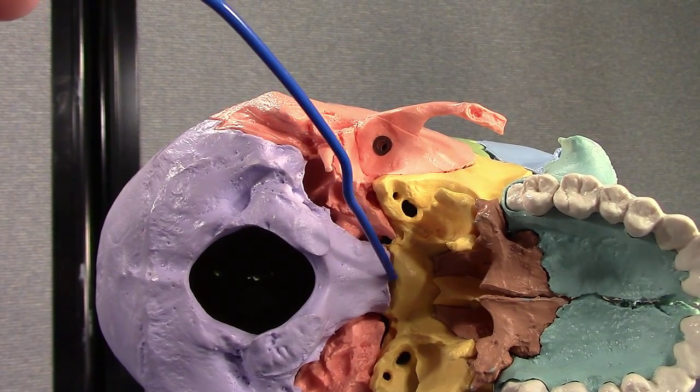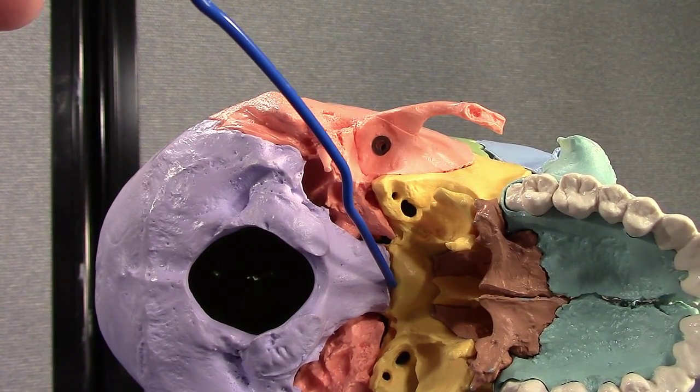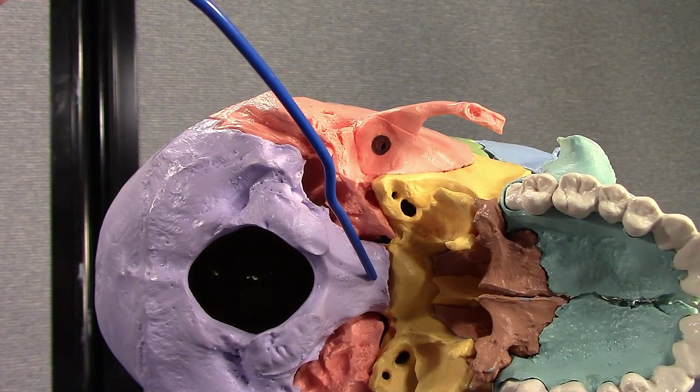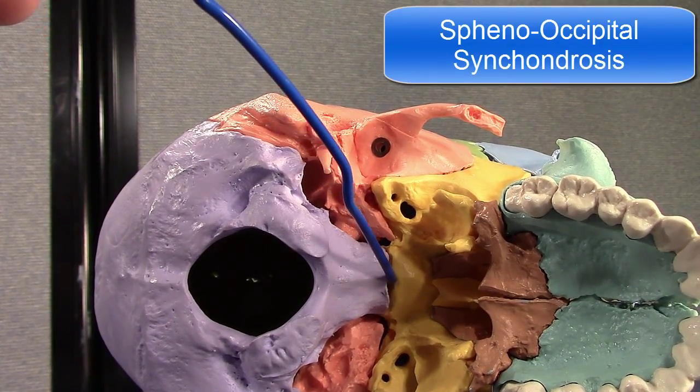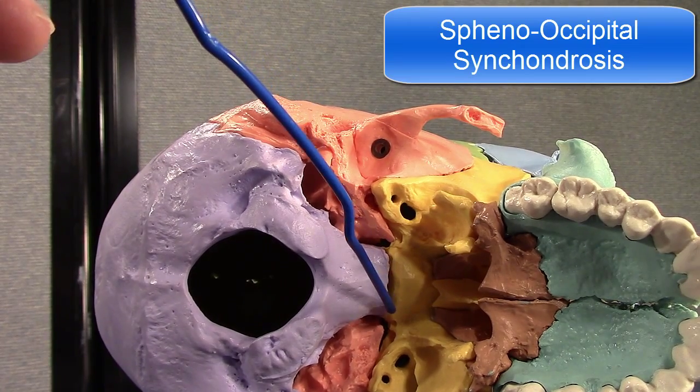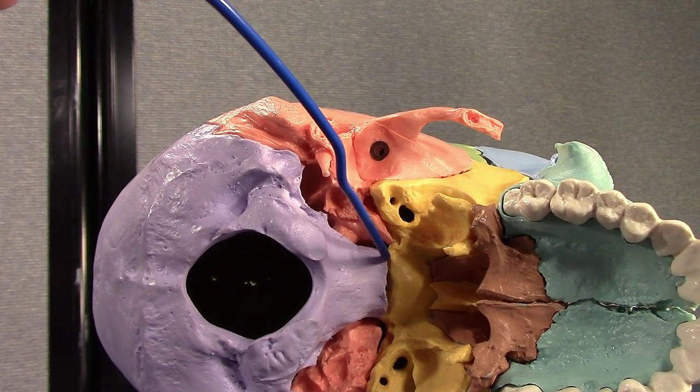Basal part of the occiput. It articulates with the body of the sphenoid right here. Okay, so this is where the longitudinal growth of the skull occurs. So this is called the spheno-occipital synchondrosis. Spheno-occipital synchondrosis. Again, this is not a suture.